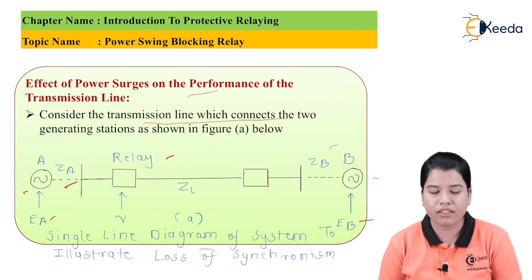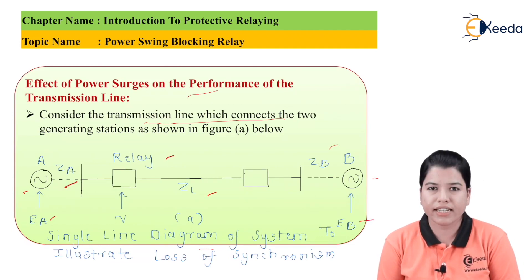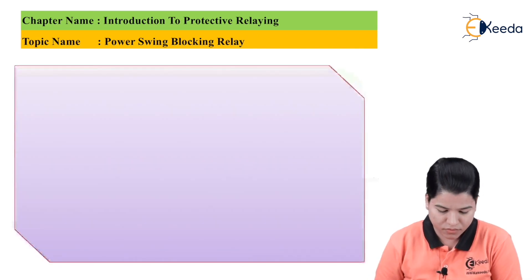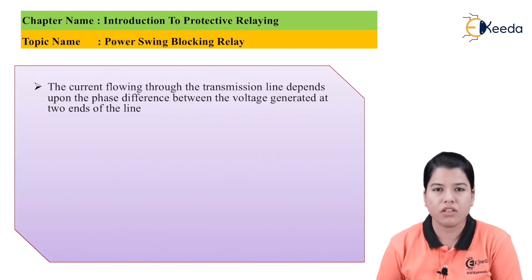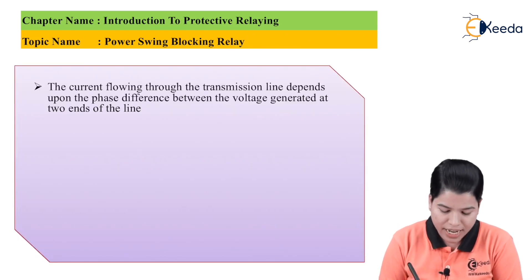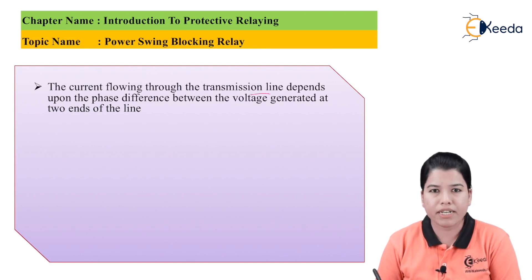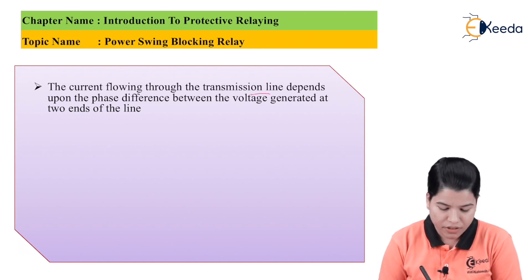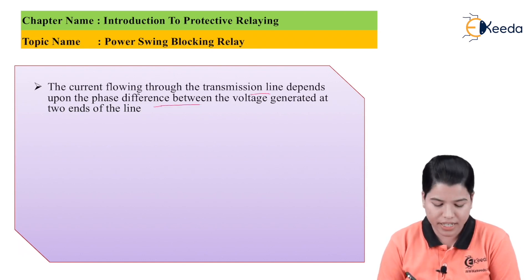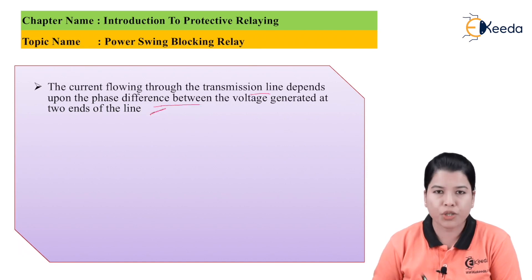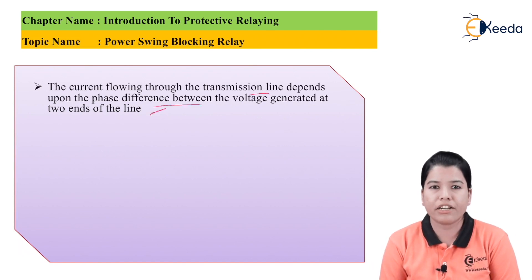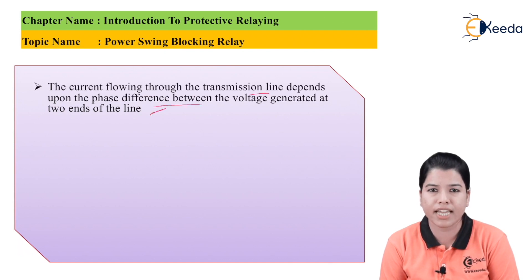Relays are connected and ZL is the line impedance. The current flowing through the transmission line basically depends upon the phase difference between the voltage generated at the two ends of the line. Whatever current is transmitted through the transmission line depends upon the generated voltages EA and EB.